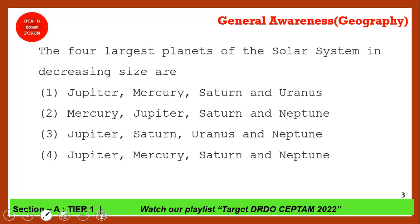This is a sequencing question asking for planets in decreasing order of size. Since Mercury is the smallest planet, any sequence that places Mercury anywhere other than last can be eliminated. Using that logic, you can rule out three options, and the correct answer is option 3. The largest planet is Jupiter and the smallest is Mercury.